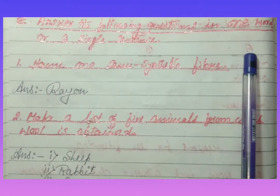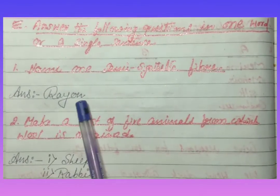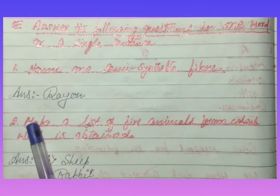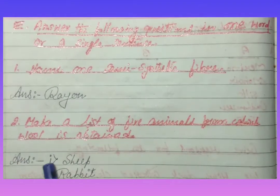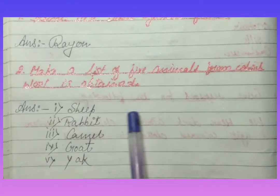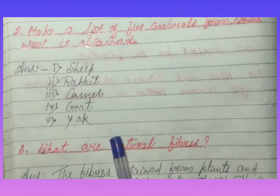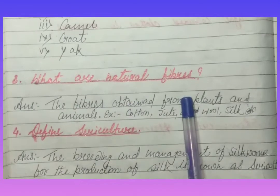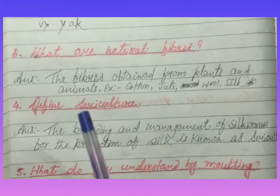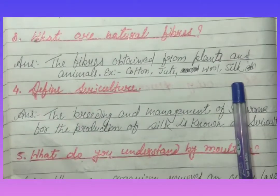Answer the following questions in one word or a single sentence. Name one semi-synthetic fiber: rayon. Make a list of five animals from which wool is obtained: sheep, rabbit, camel, goat, and yak. Natural fibers are the fibers obtained from plants and animals. Examples include cotton, jute, wool, and silk.